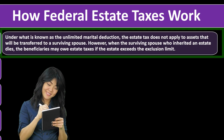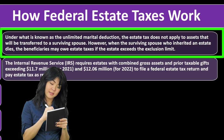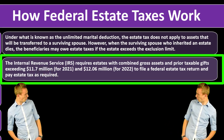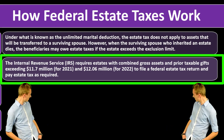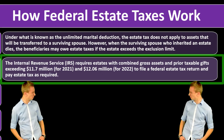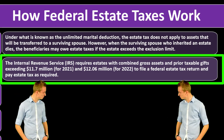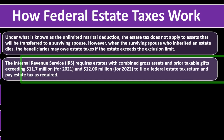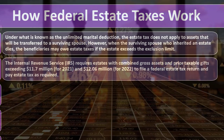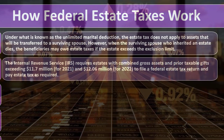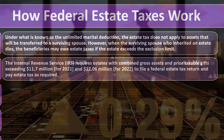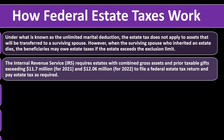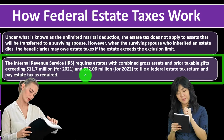When the surviving spouse dies and the beneficiaries inherit the estate, they may owe estate taxes if the estate exceeds the exclusion limit. The IRS requires estates with combined gross assets and prior taxable gifts exceeding $11.7 million for 2021, or $12.06 million for 2022, to file a federal estate tax return and pay estate taxes as required. This is not income — it's the asset value on the balance sheet side of things.